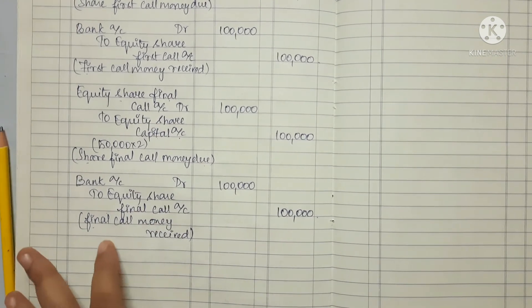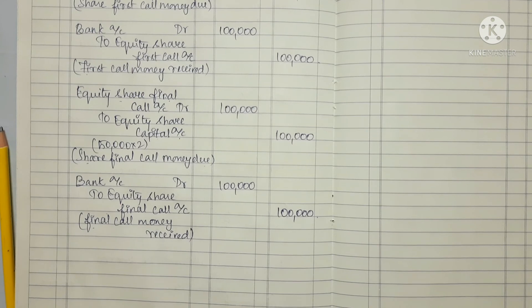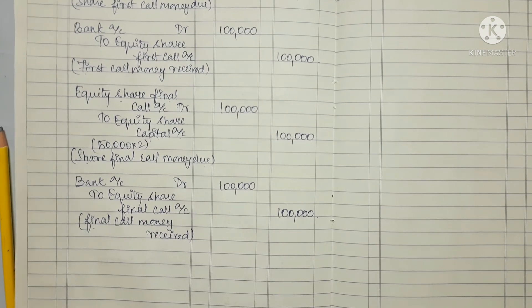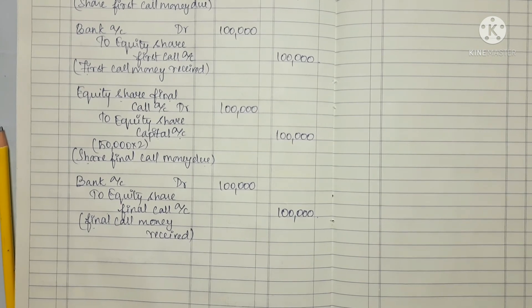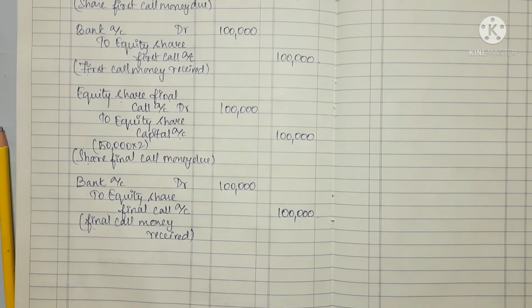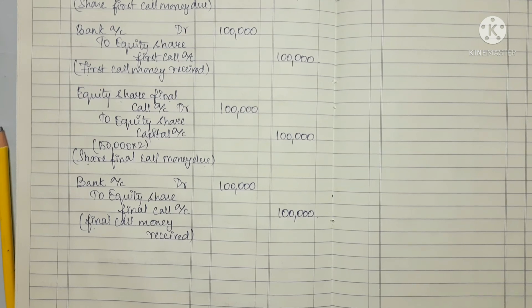This covers the issue of shares at par value — all journal entries from application through allotment to the final call. We will see some additional information in the next video. Stay tuned, keep watching, keep learning. Thank you.